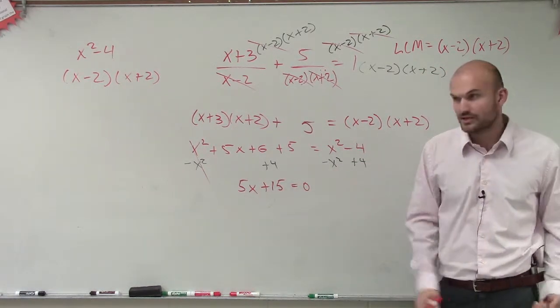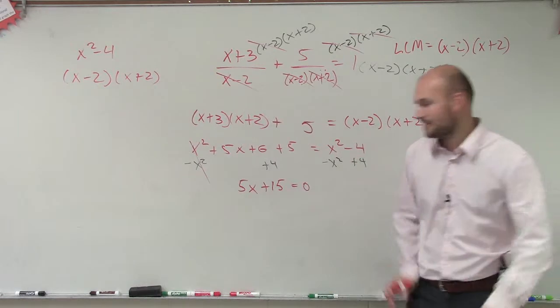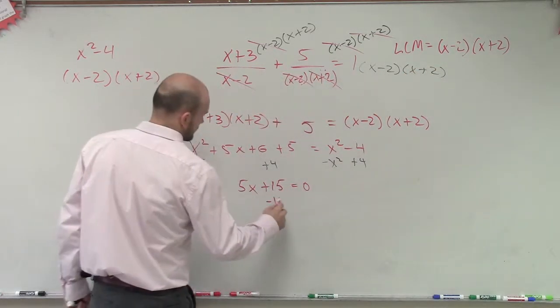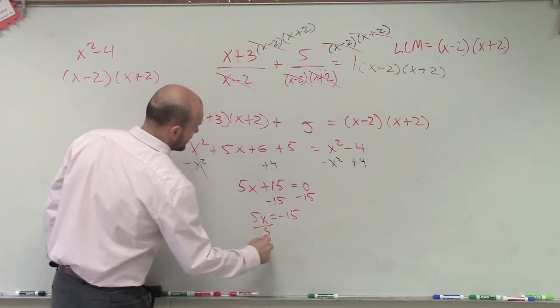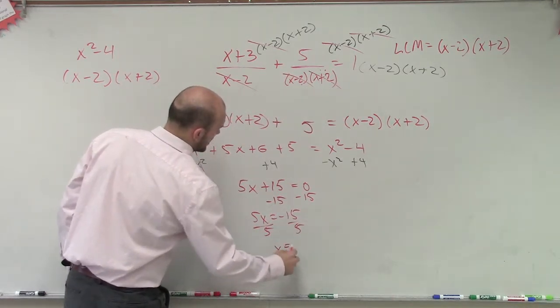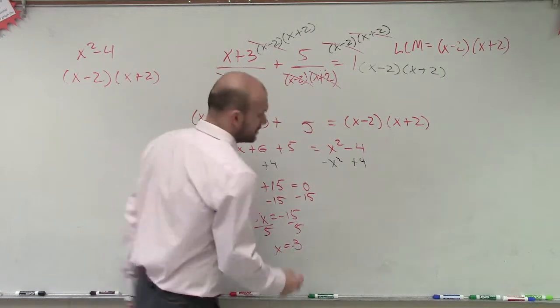You guys should be fairly familiar with solving linear equations. This is what we call easy, right? Kind of. So you subtract the 15. 5x equals negative 15 divided by 5. x equals negative 3.